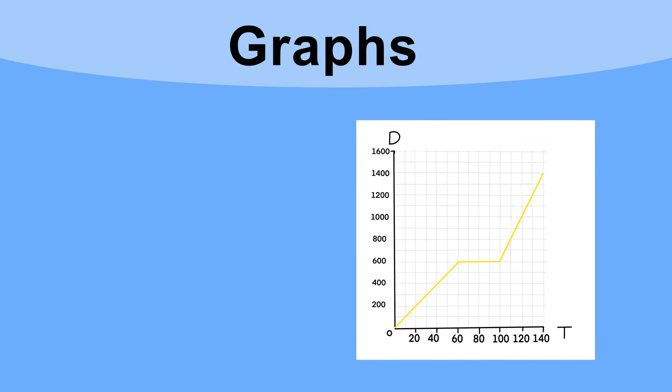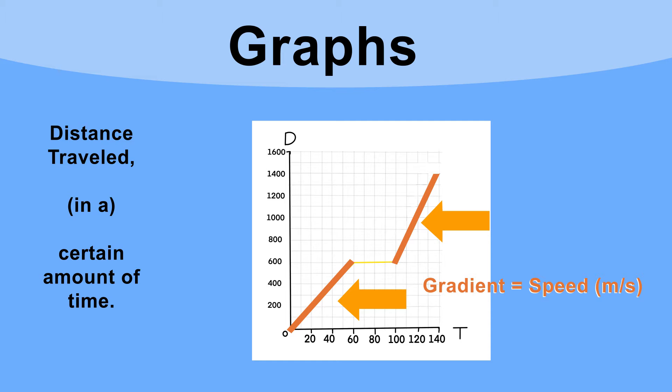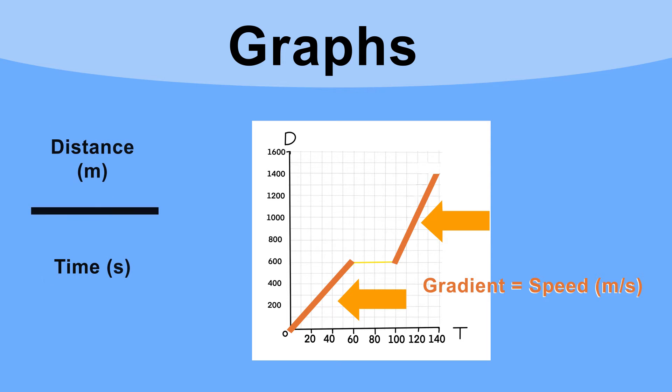So what can we see on this graph? Well, we can see straight away the steeper the line, the faster the car is moving—the more meters it's doing every second. In fact, the gradient of the line tells us the speed: the distance traveled in a certain amount of time. And we can calculate that.